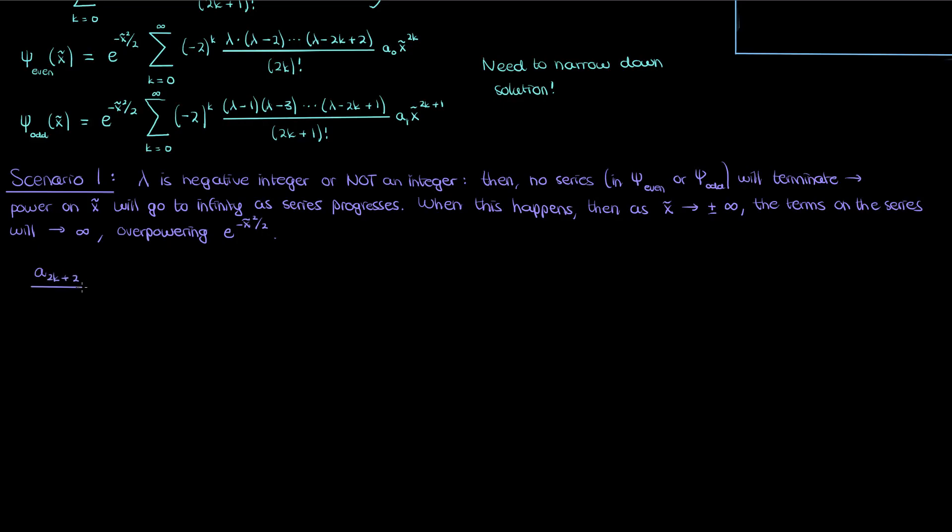Let's look at the ratio of the successive coefficients a_2k and a_2k+2. Now the coefficient a_2k is already written in my series, it's the coefficient of x to the power 2k. Meanwhile a_2k+2 is given by taking this a_2k coefficient and replacing the k by k + 1. If we do that this is what we get.